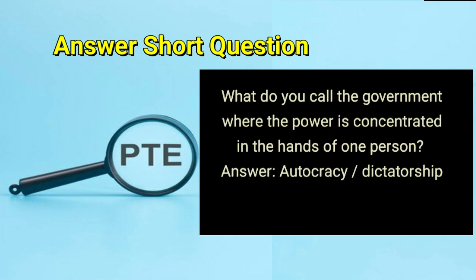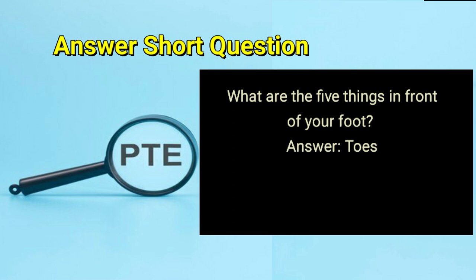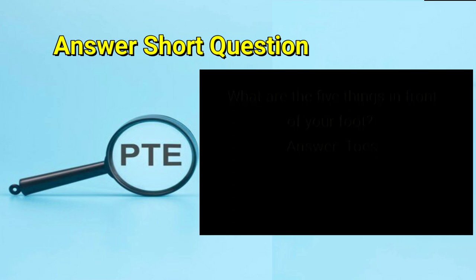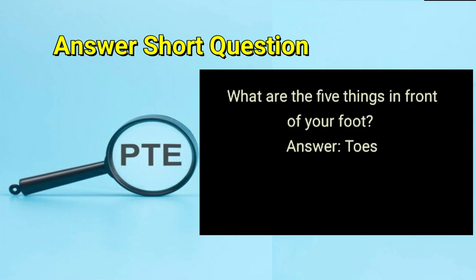What do you call the government where the power is concentrated in the hands of one person? Answer: autocracy or dictatorship. What are the five things in front of your foot? Answer: toes.